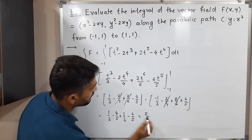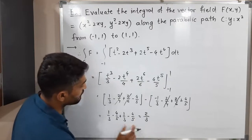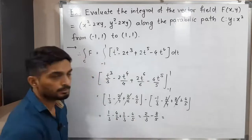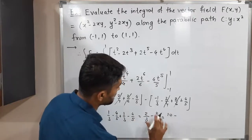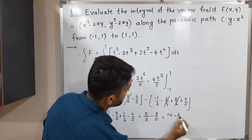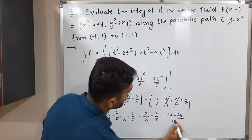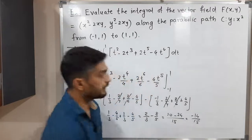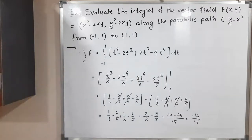Remaining terms: 1/3 + 1/3 = 2/3, and -4/5 - 4/5 = -8/5. Cross multiplying: 10/15 - 24/15 = -14/15. So the required answer is -14/15. Make a screenshot. Thank you, bye.